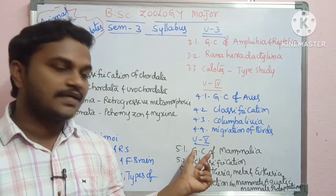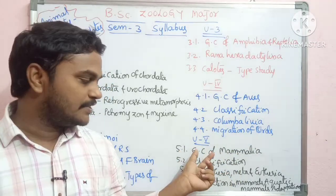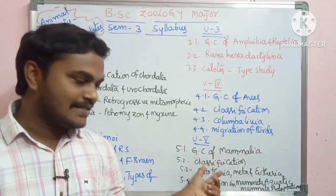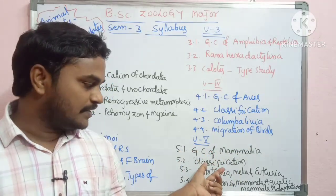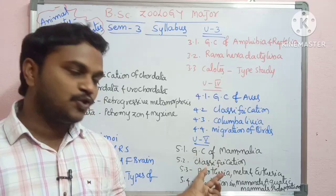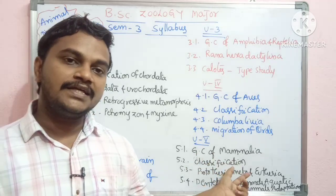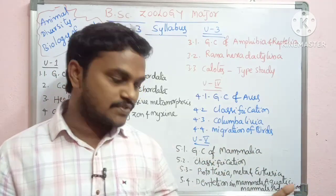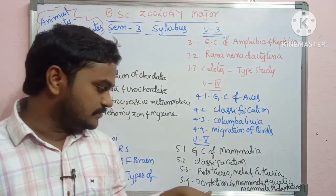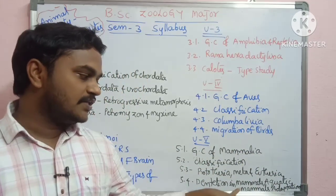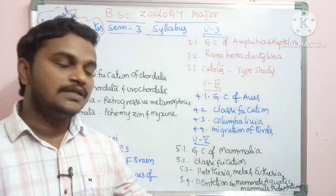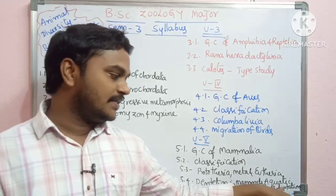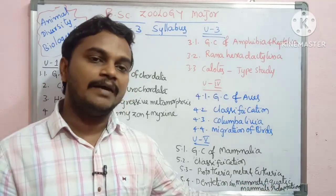Unit 5 covers general characters and classification of mammals — including Prototheria, Metatheria, and Eutheria comparative study. Sub-topic 5.5 covers dentition in mammals, and aquatic adaptation in mammals is also a main topic.